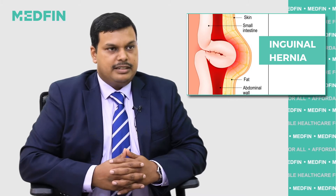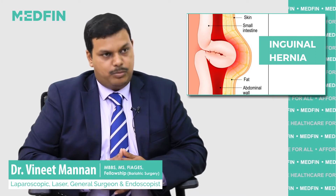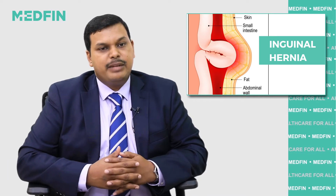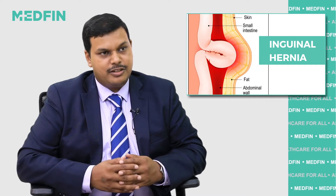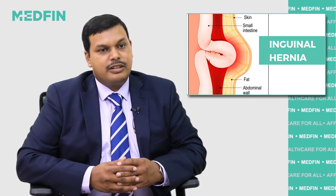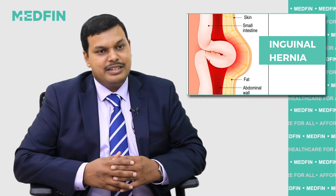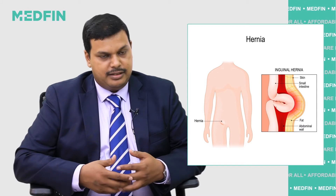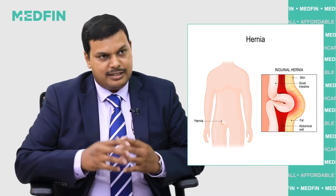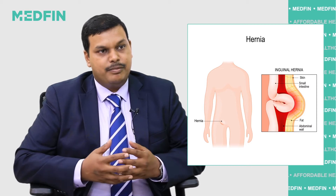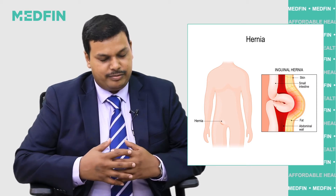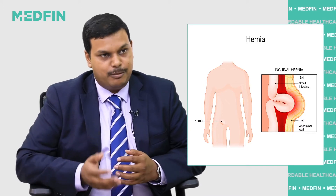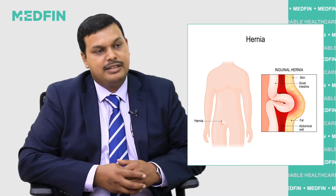Inguinal hernia is commonly seen in the groin region. It can occur on both sides or on one side depending on the patient's condition. The main reason why hernia occurs is due to the weakness of the abdominal wall. There are various openings in the abdominal wall which allow structures from inside the abdomen to come out and vice versa. When the wall around these openings becomes weak, there is an enlargement of the opening, causing structures which should not normally come out to do so along with the regular structures.